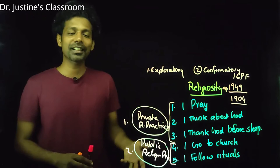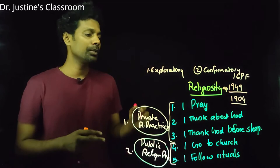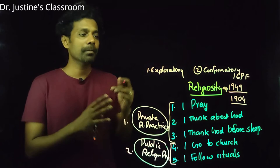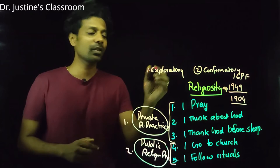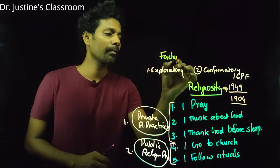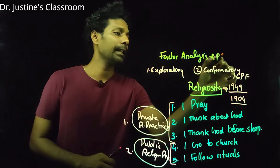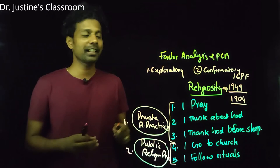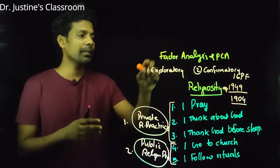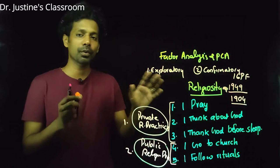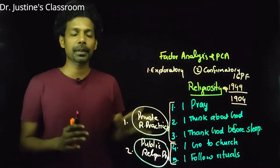When we do factor analysis, we often make a mistake by confusing it with a similar concept called Principal Component Analysis (PCA). This is a commonly discussed controversy — factor analysis versus PCA. Actually, PCA is not factor analysis; that's very important. We'll see the detailed difference in the next video, but basically both methods are used for the same purpose — dimension reduction — yet their logic is different.